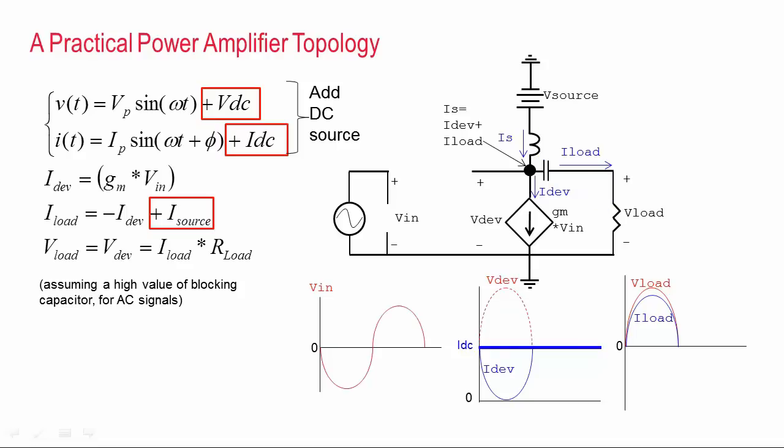So if the input signal goes positive, then the current source draws more current from the supply, and this is more current than the supply is providing in a DC sense. So where does that extra current come from? Well, it gets pulled through the load from ground, and this decreases the voltage at the load, which decreases the voltage at the device. Now, keep in mind that there's also a DC voltage bias on the device too. So the voltage here might be going from the DC value down to zero, so when I say they're coupled, I really mean they're coupled in an AC sense.